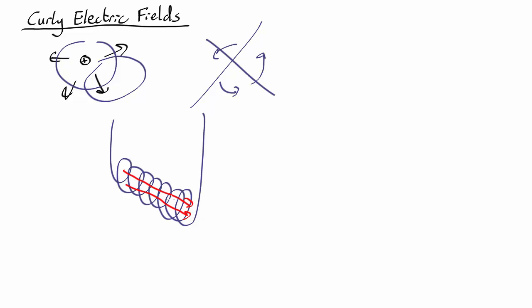But if the magnetic field in the middle is changing, it's either getting bigger or getting smaller, then it turns out you get one of these curly fields curling around the solenoid. Actually it curls around inside the solenoid as well. Which direction it goes depends which way the magnetic field is going and whether it's increasing or decreasing.